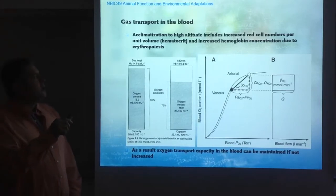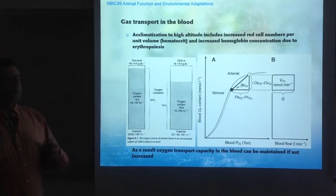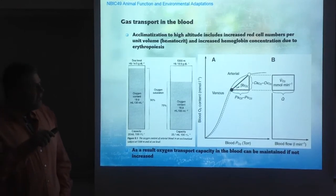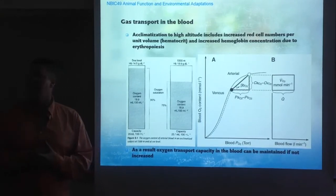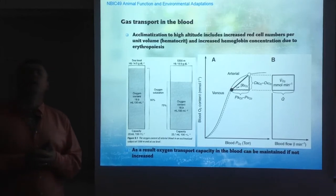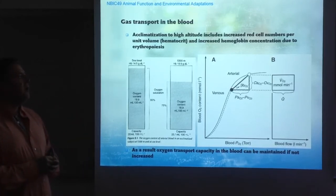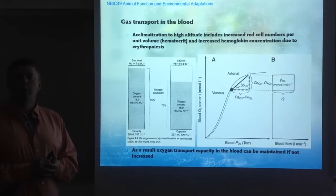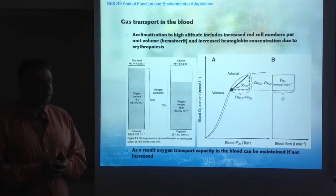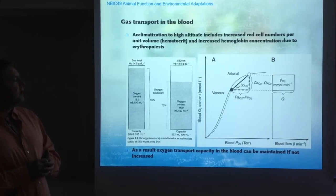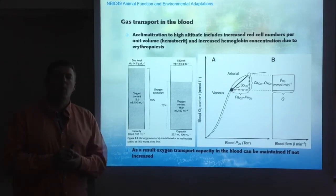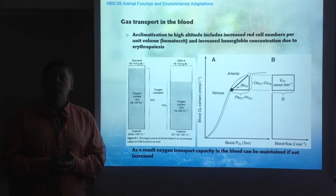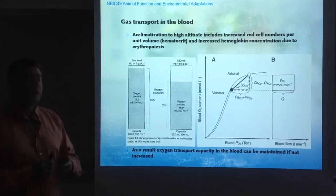Gas transport in the blood basically implies that during acclimatization at high altitude, there is an increase in red blood cell number and an increase in hemoglobin concentration. This is the result of an erythropoietic response triggered by the release of erythropoietin, a cytokine. Erythropoietin will target the bone marrow to produce new red blood cells that will be released into the circulation.